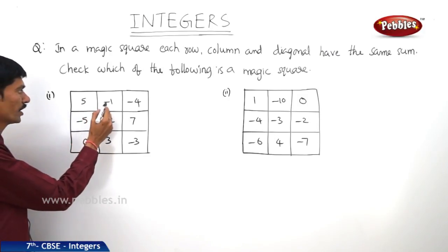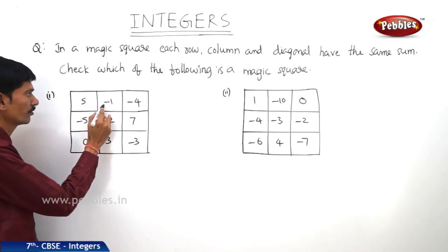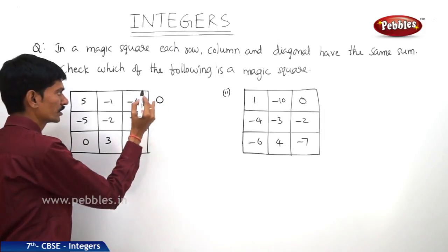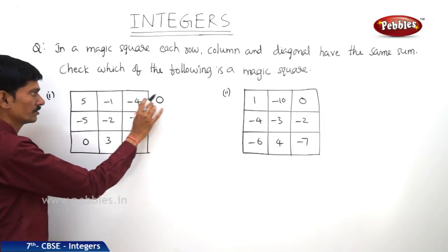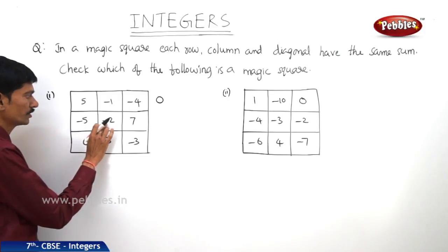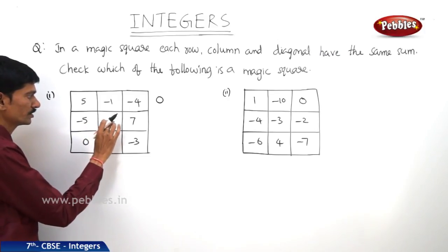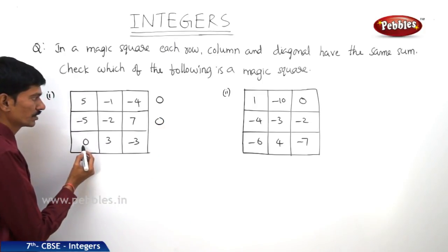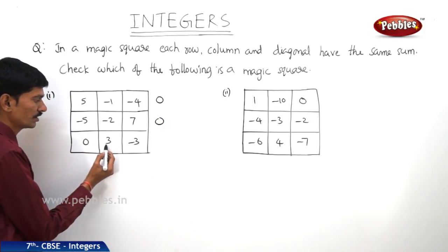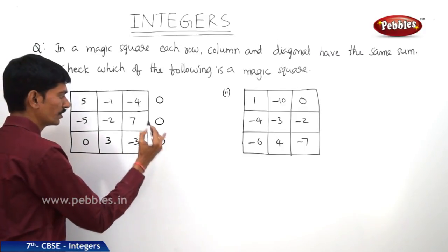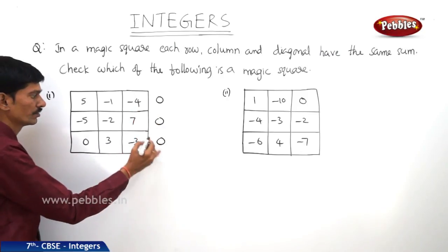Now 5 minus 1 is 4, and 4 minus 4 is 0. So the sum of the numbers in the first row is 0. And here minus 5 minus 2 is minus 7, and minus 7 plus 7 is 0. Then in the third row, 0 plus 3 is 3, and 3 minus 3 is 0. So in each row, the sum of the numbers is 0.